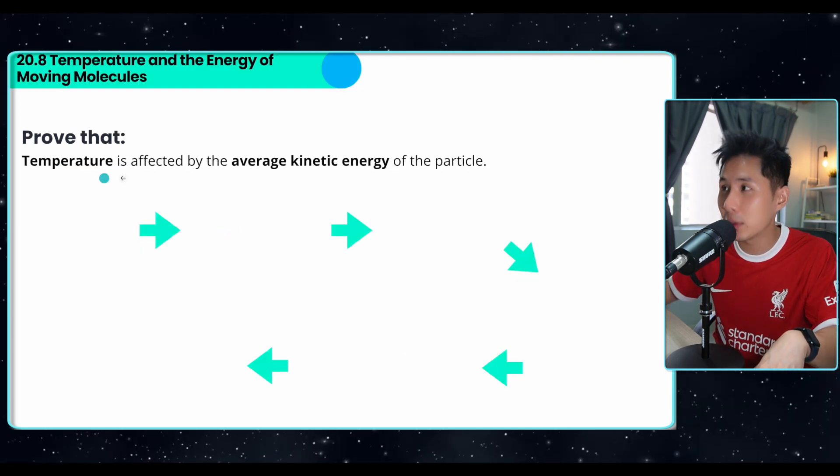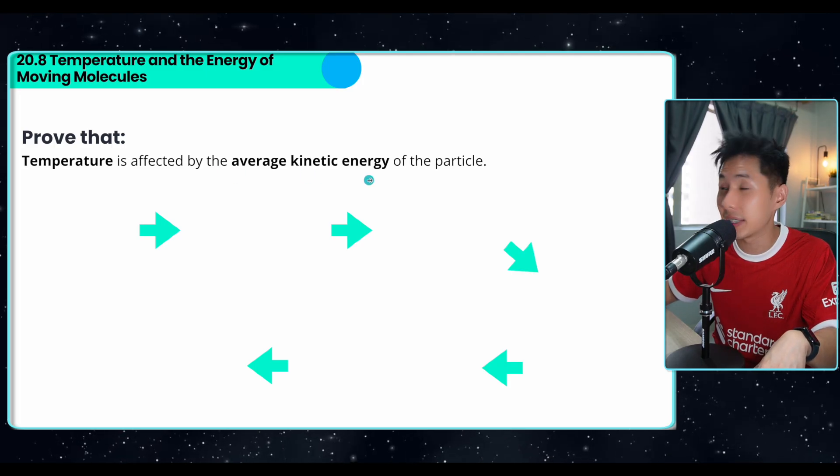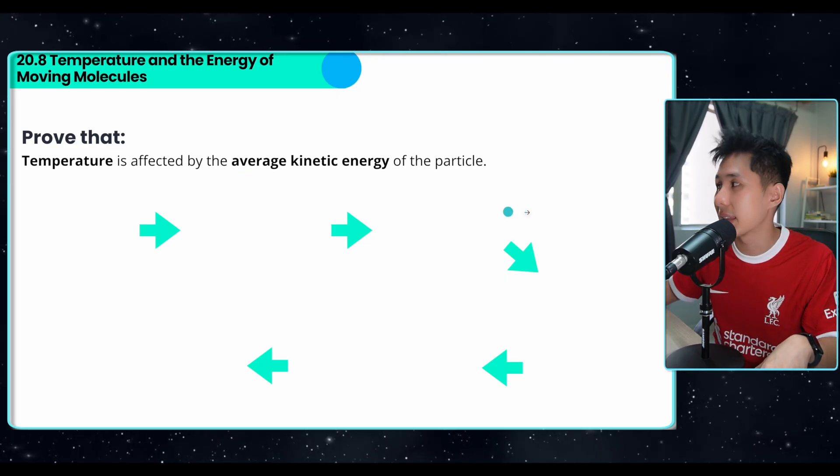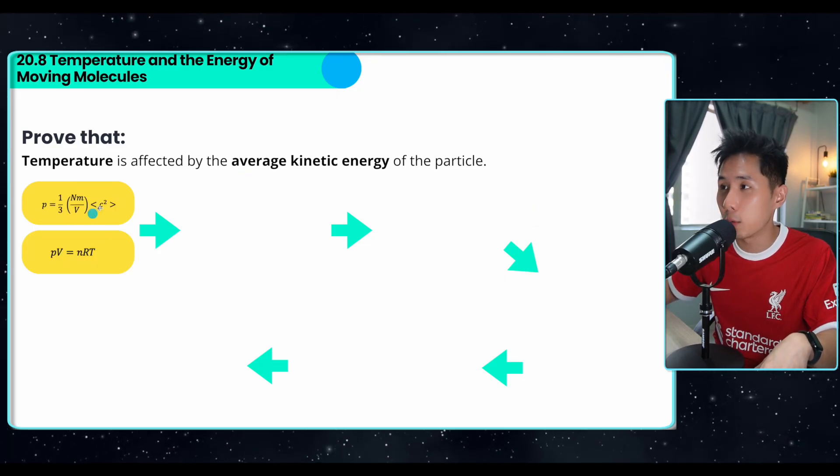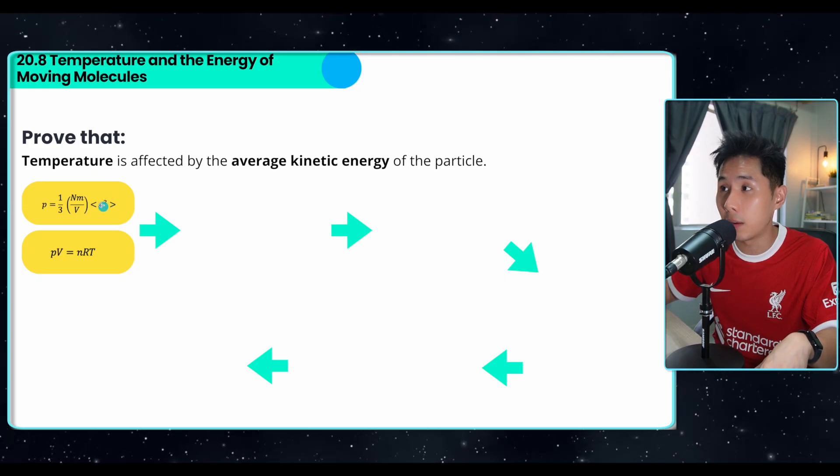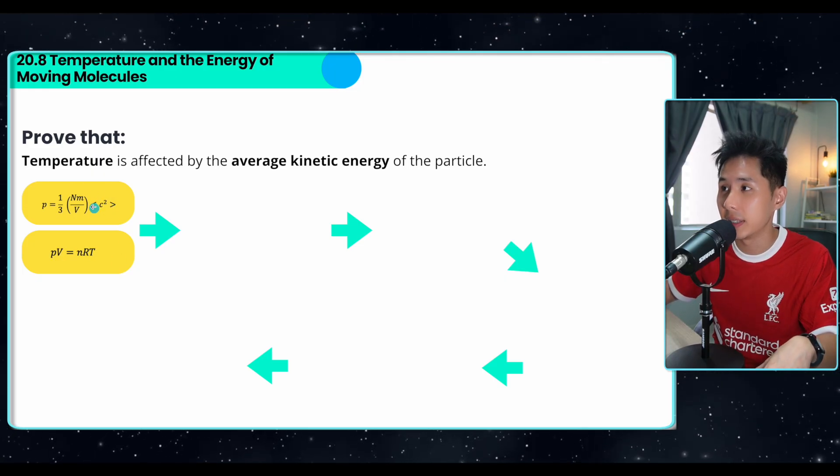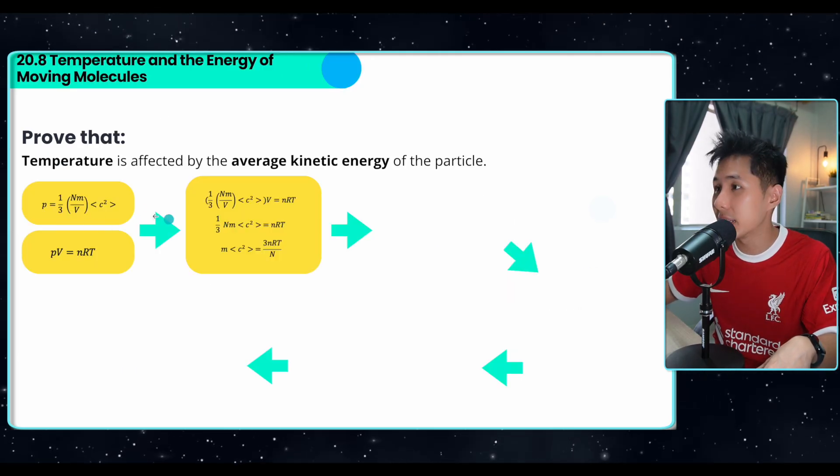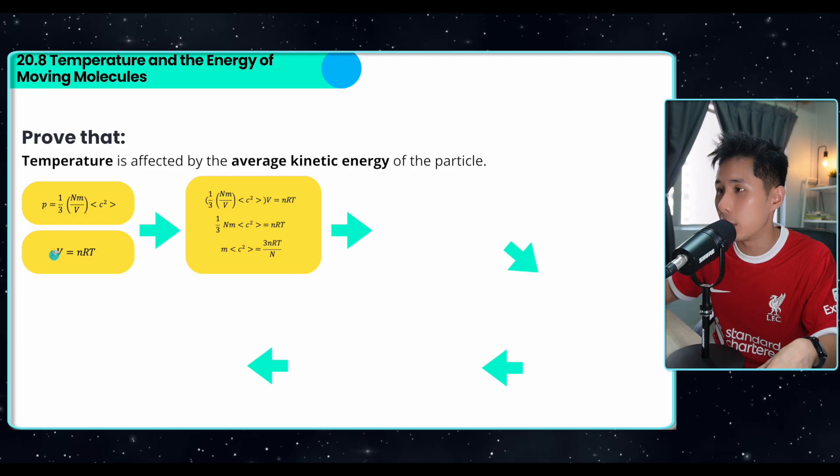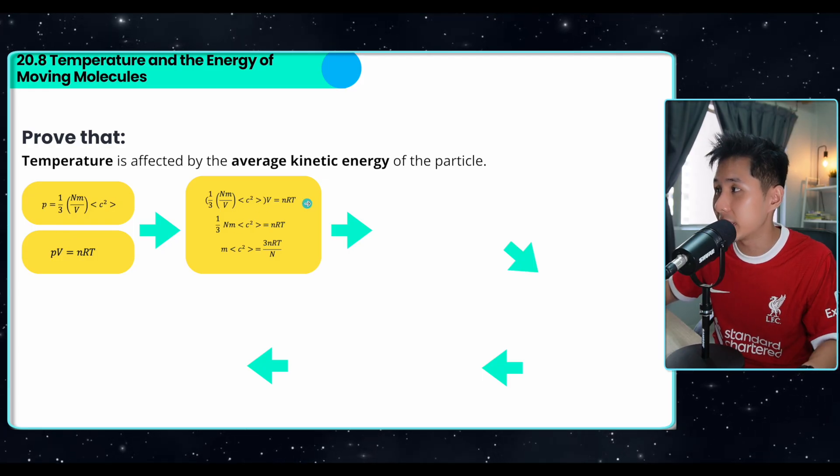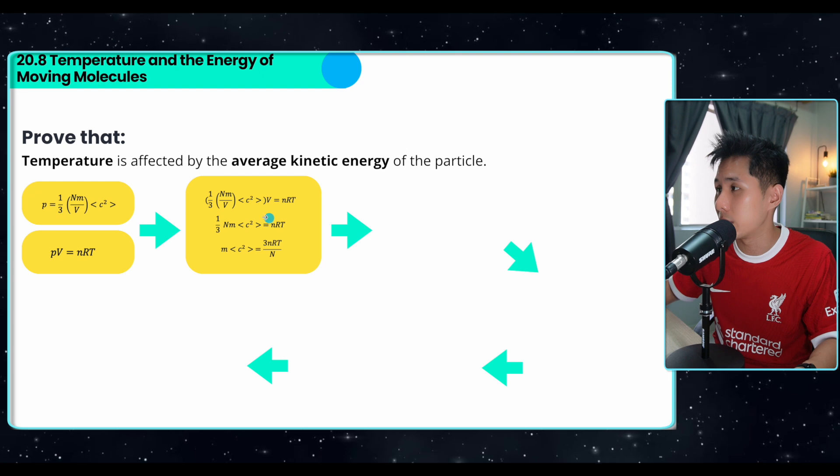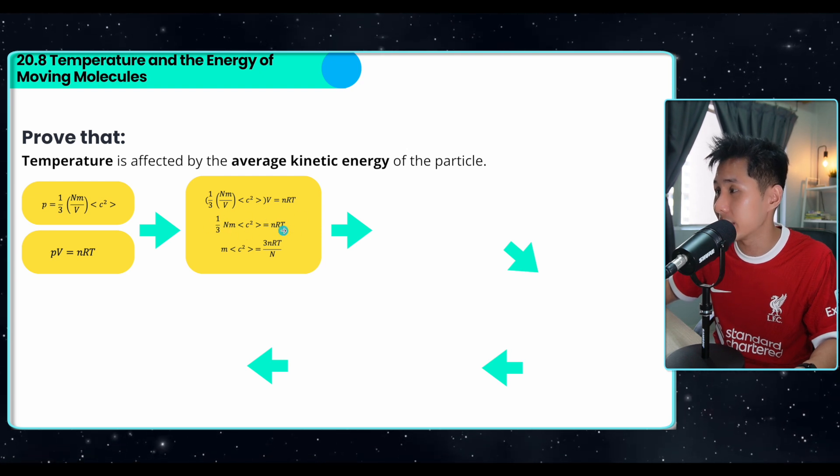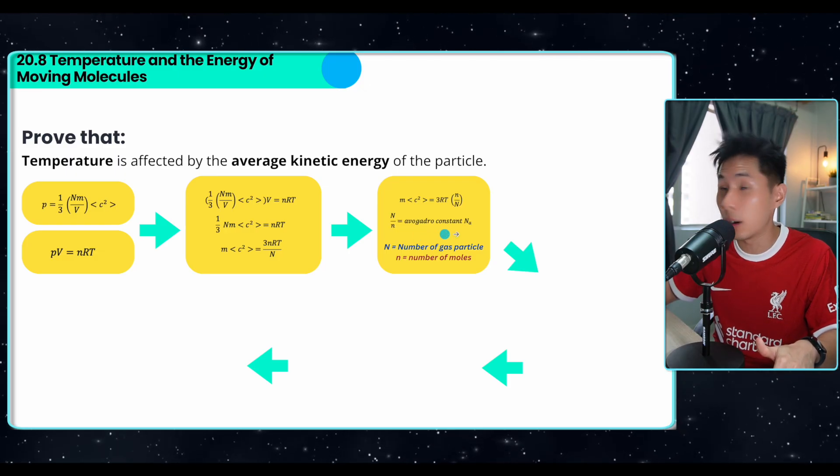So another thing that you will need to prove is temperature is affected by the average kinetic energy of the particle. We know that's the truth. But how do you prove it using the equation? And let's do it. That's the equation that we just derived. I didn't derive it to the most simplified form because it's required later, this volume, but it's the same as the equation here. Now, two equations that we have, we're going to substitute p into this equation. So which will give us all this thing. And we can cancel out the v here, which will result in the equation here, and move 1 over 3 and n to the other side.